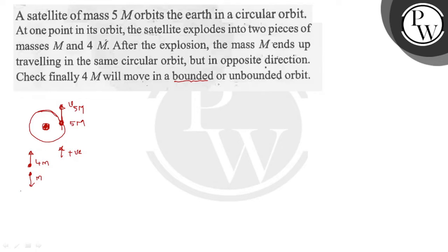So now m ends up traveling in the same circular orbit. That means what? Its velocity is v5m, is it not? Because it is having the same circular orbit. And what about the 4m? Whether 4m is going to end up or not, now.